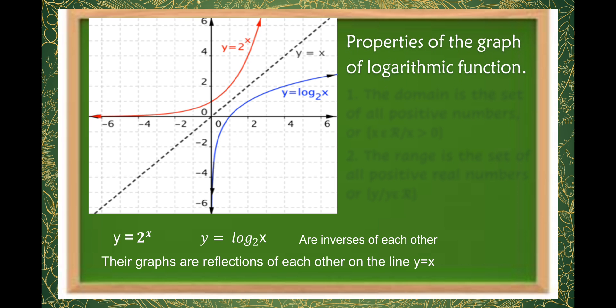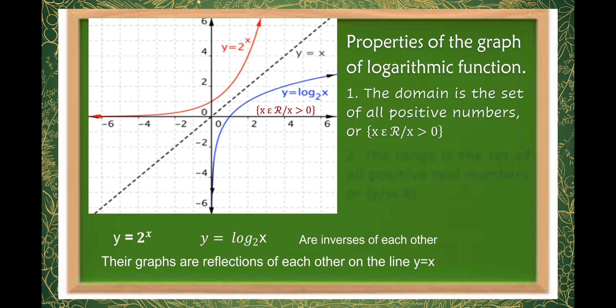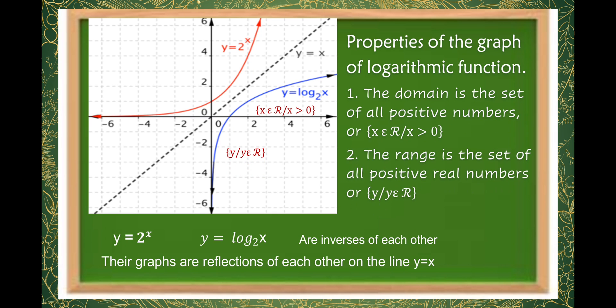We have the properties of the graph of a logarithmic function. The first property is: the domain is the set of all positive numbers, or x is an element of the real numbers such that x is greater than 0. The second property is: the range is the set of all real numbers.